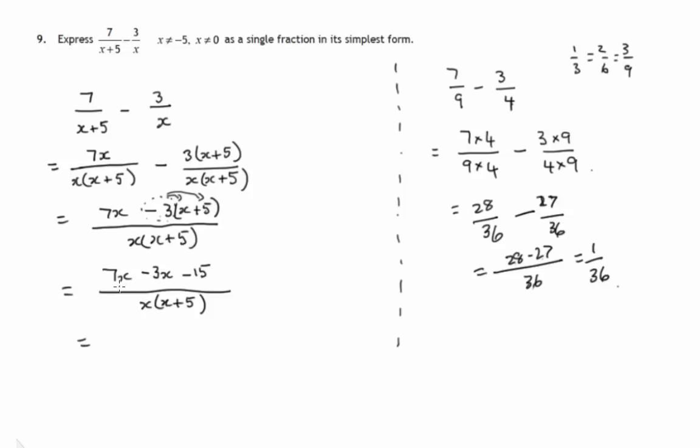And looking at this, 7 lots of x minus 3 lots of x would be 4x. And a minus 15 over x times x plus 5. And that's in simplest form. We can't cancel anything. There's no factor x on the top line. This part doesn't have an x in it and so on. So there's no more cancelling that we can do. And we're left with a single fraction in its simplest form.